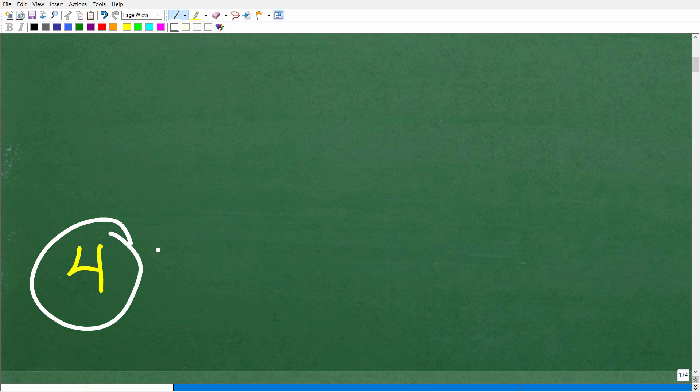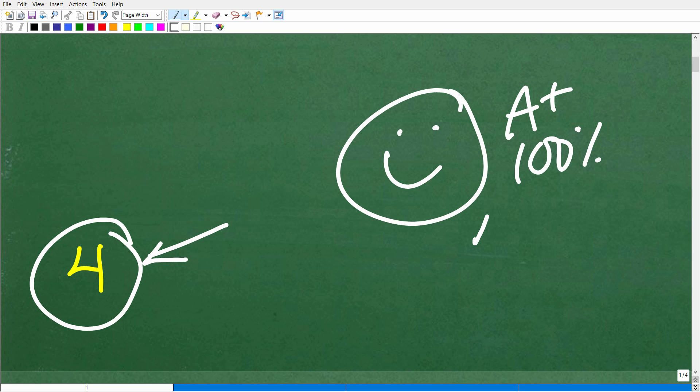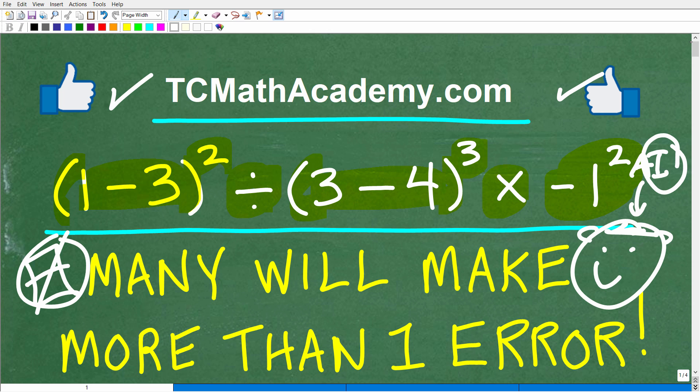So the answer is 4. All right, so if you got 4, that is very, very awesome indeed. Matter of fact, let's go ahead and celebrate by giving you a nice little happy face and A+ 100% and multiple stars. So you can tell your friends and family that indeed you are a certified professional math expert in the area of order of operations and powers. So that's really kind of the main areas where students are going to make some mistakes.